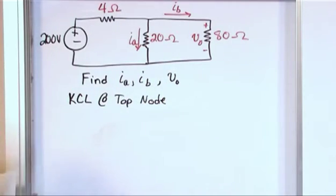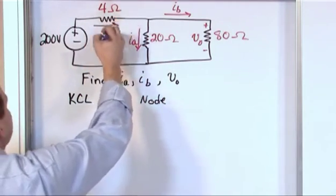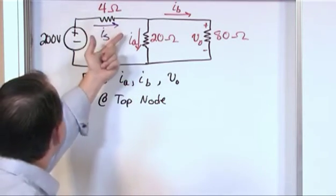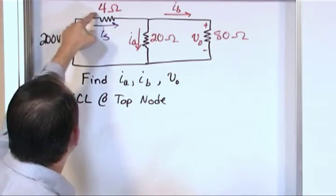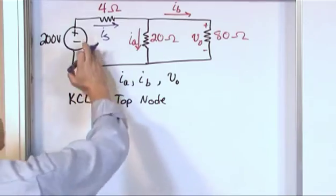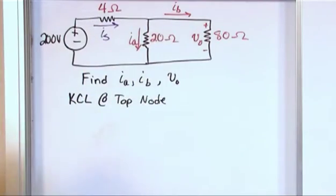in purple, I'm going to take it upon myself to label this current I sub s. I need to have something labeled there. And I'm going to pick a direction that I think is true because I think it's coming out of the source in that direction. And I'm going to write all of my equations consistent with the direction that all of the current is labeled on my diagram.